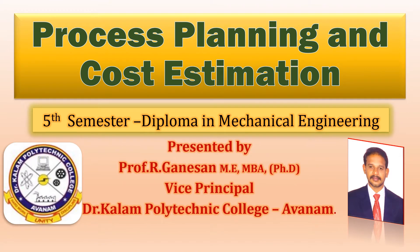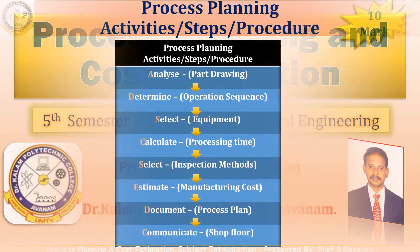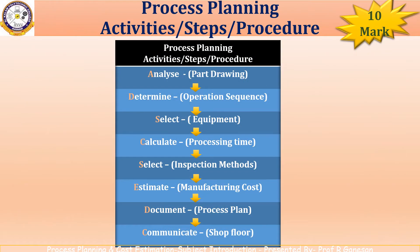Welcome to PolyMech Tutor. Today we are going to see 5th semester Diploma in Mechanical Engineering subject: Process Planning and Cost Estimation. Unit 1: Process Planning. First 10 mark question: Process Planning Activities — explain the steps in process planning, or explain the process planning procedure.